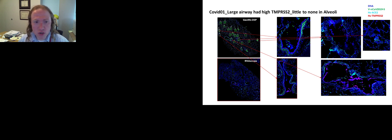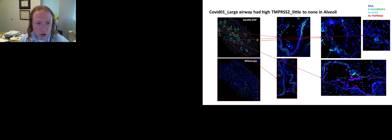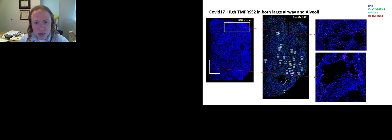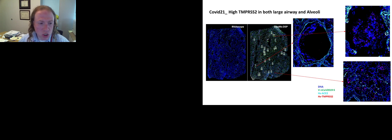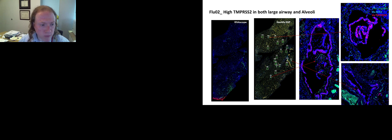This is representative of some of the different disease states or presentations we see within our patient panel. These are two different patients where we see similarity from patient 17 to 21 but with low expression in the initial sample. This is similarly shown in flu where we actually see high representation of TMPRSS2 through almost all the samples, again showing that there's more variability present within the COVID samples.